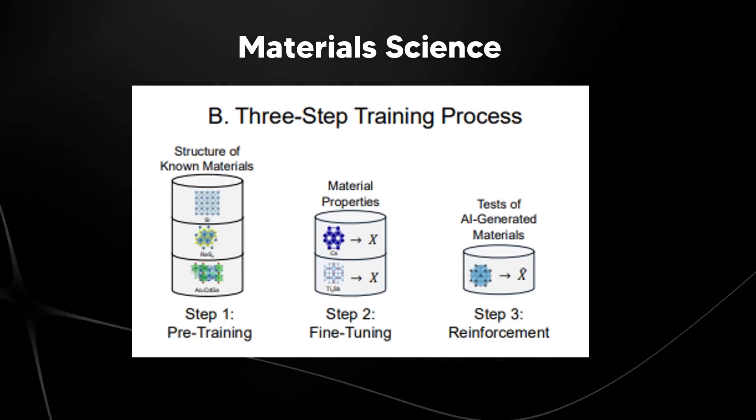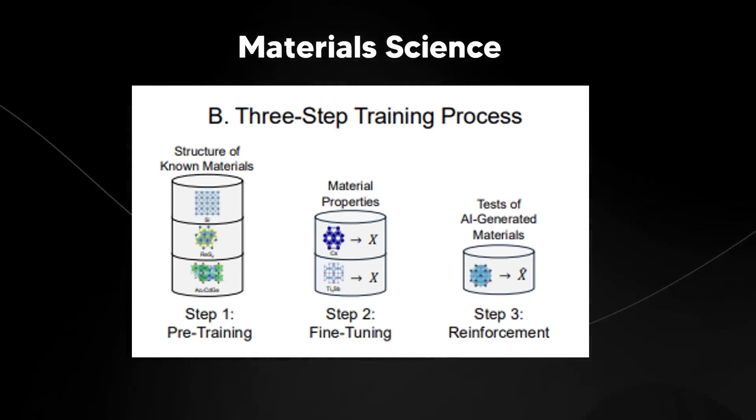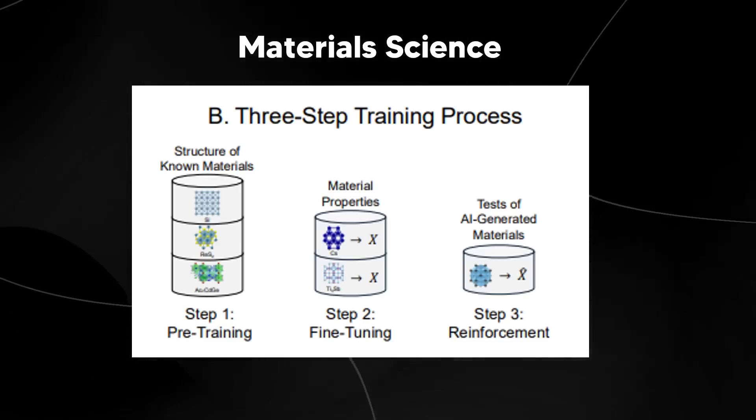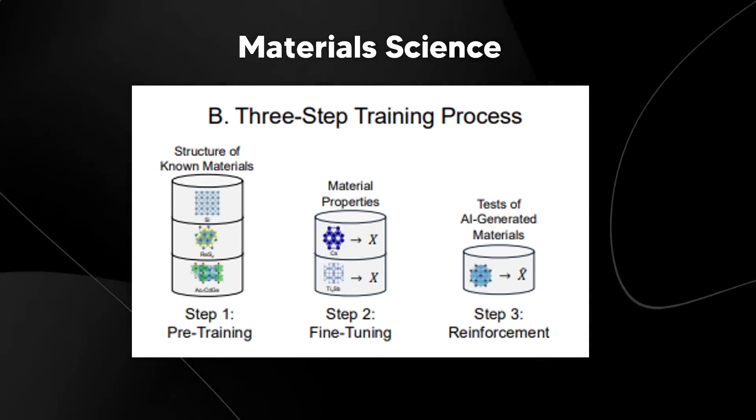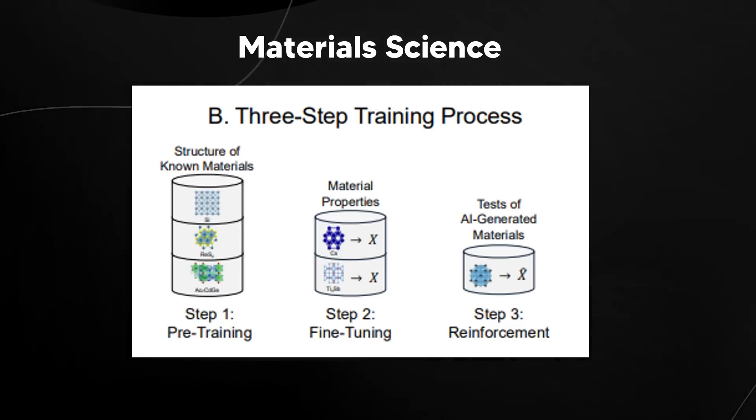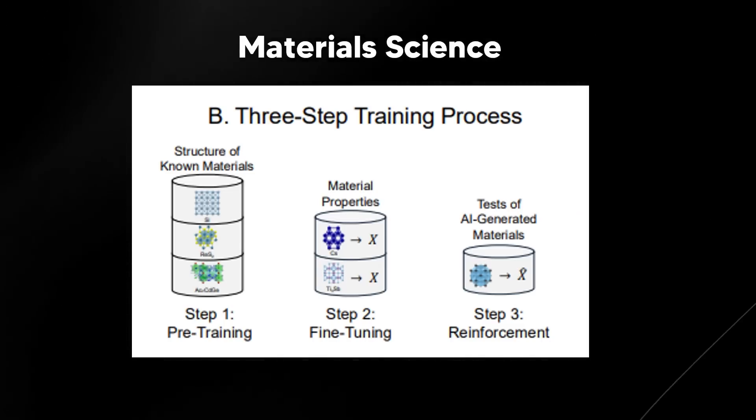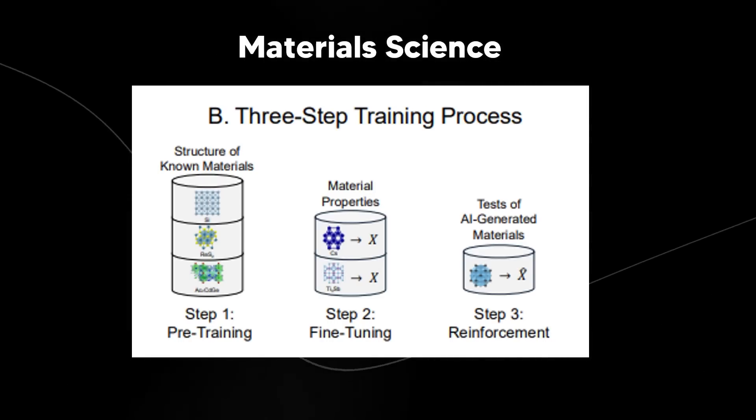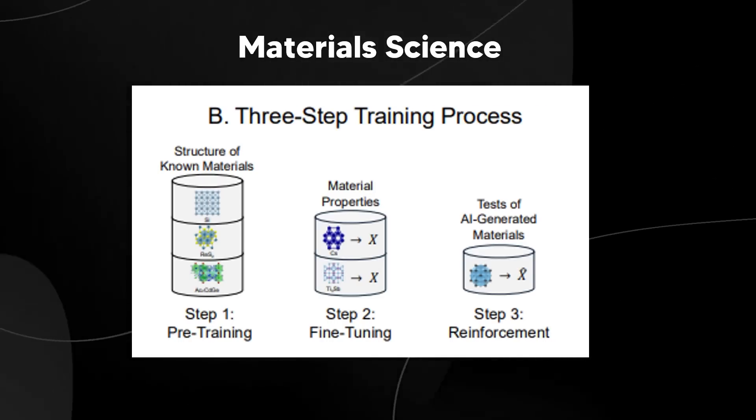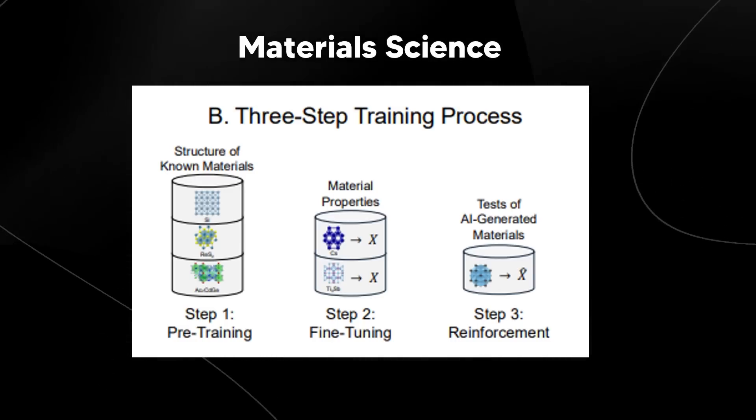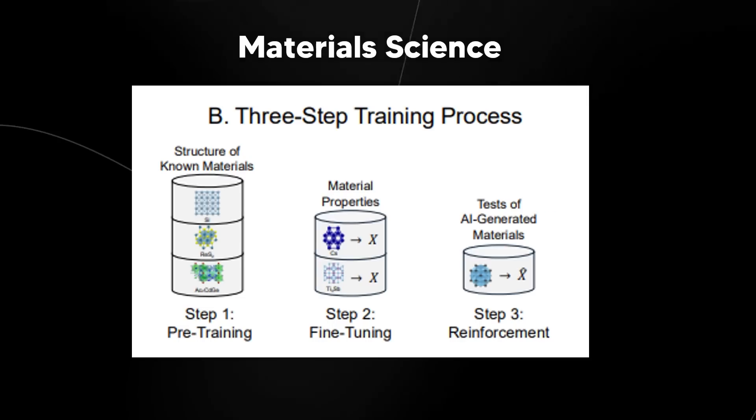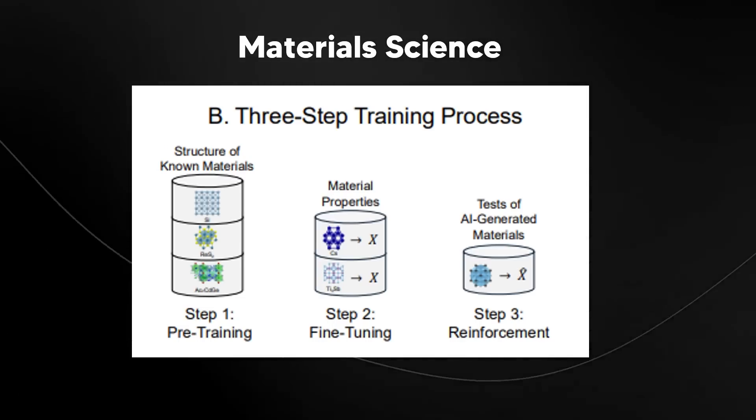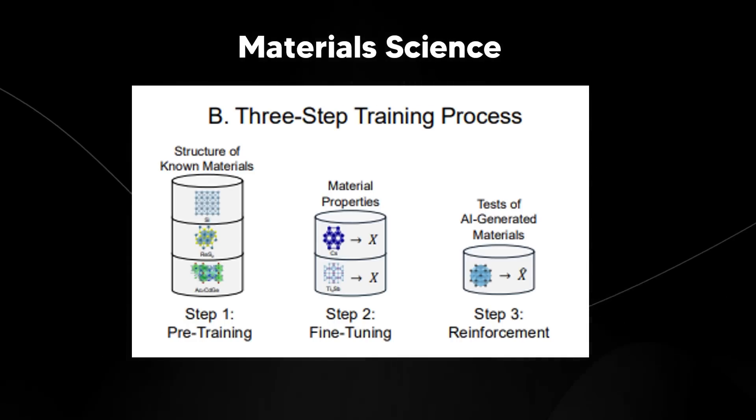Then we've got the three steps training process. This is where it goes through pre-training. The first AI learns from a big collection of known materials. It understands different kinds of structures, similar to a student studying existing examples before trying to create their own. Then what we have is the fine tuning. The AI adjusts its learning for specific types of materials by focusing on certain properties, making it better at predicting materials for particular uses. Lastly, we have reinforcement. Finally, the AI is tested by the scientists who synthesize the materials it predicts. Based on how well the predictions turn out, the AI keeps learning to improve.